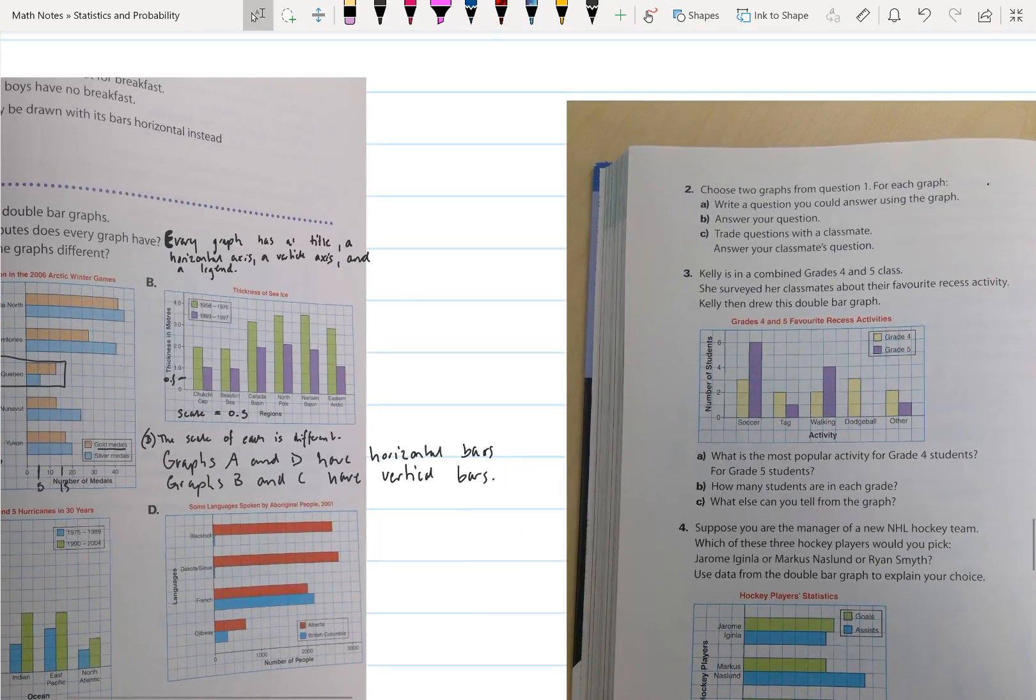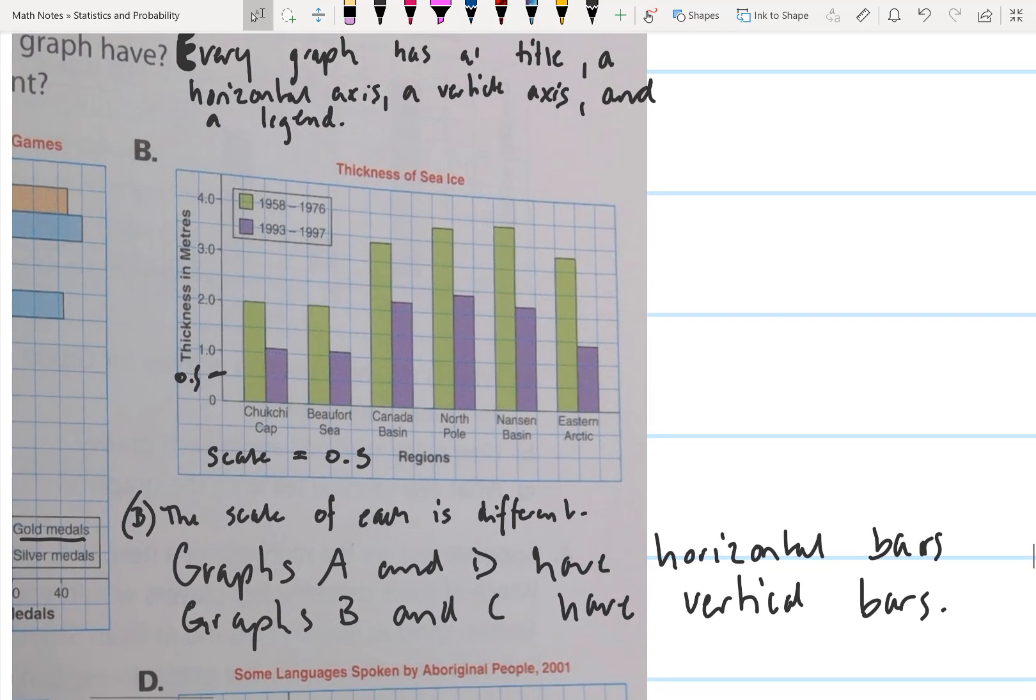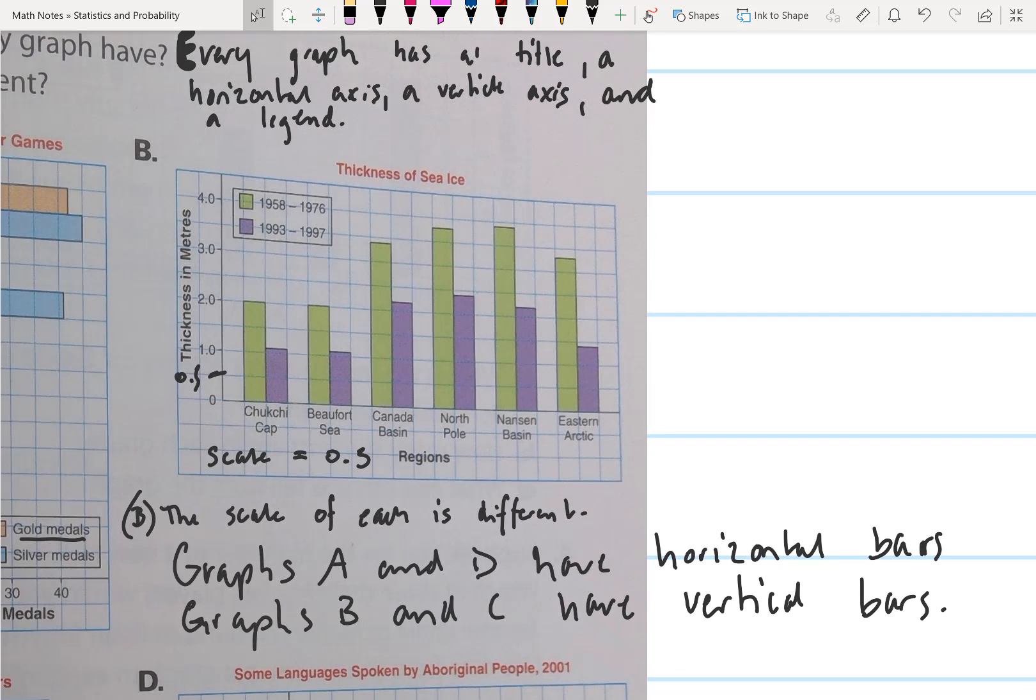Let's take a look at graph B. Graph B represents the thickness of sea ice in meters, looking at different regions and different years. We can see that the thickness of the sea ice has decreased in the most recent years.